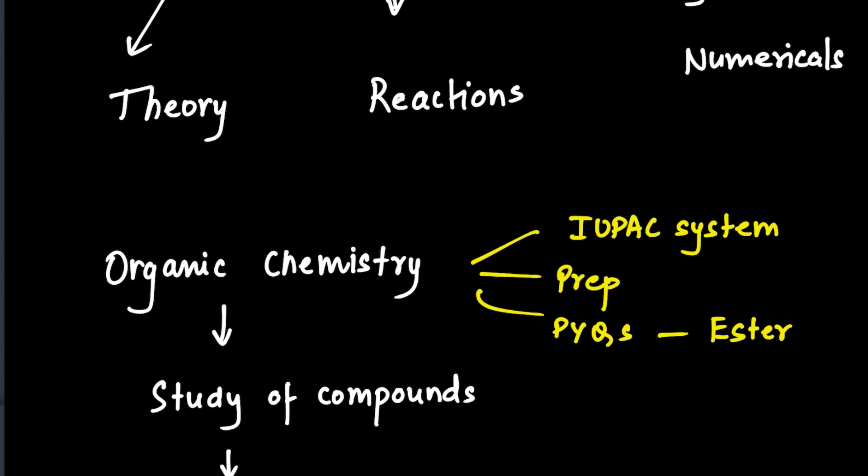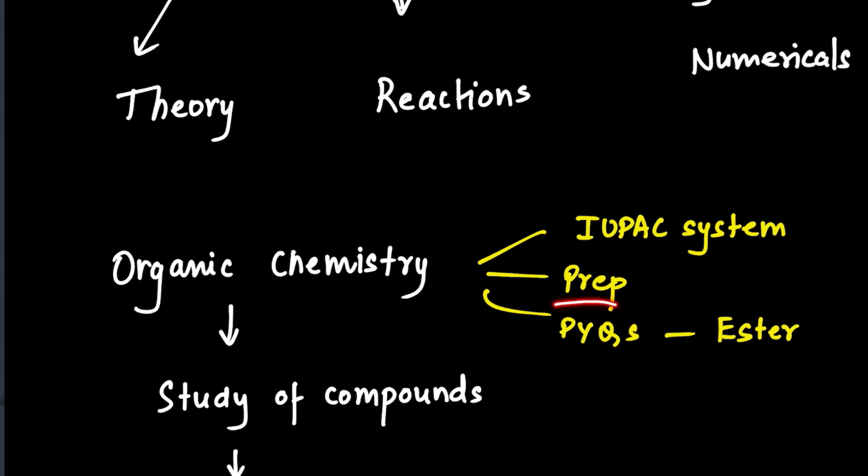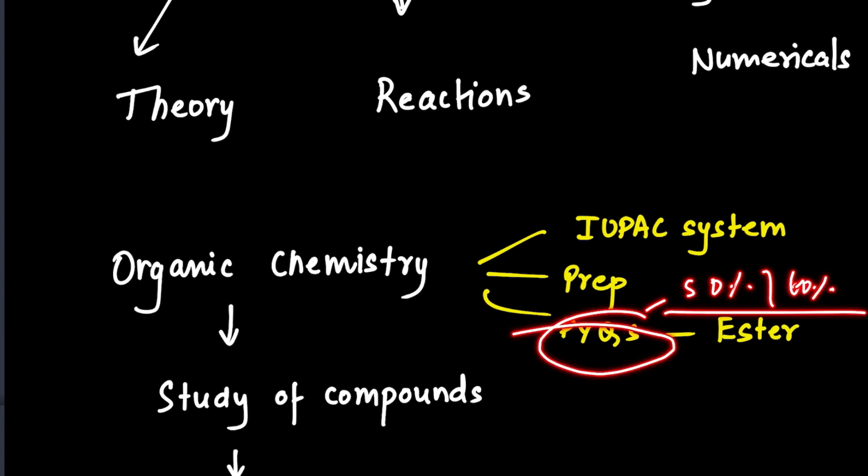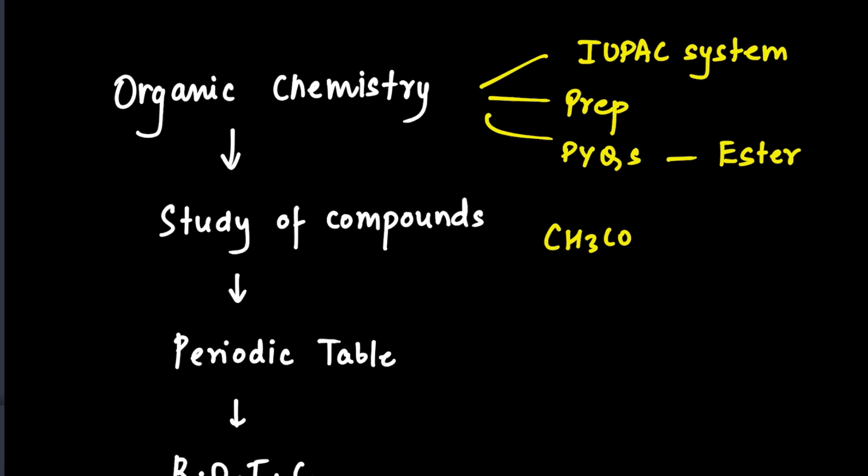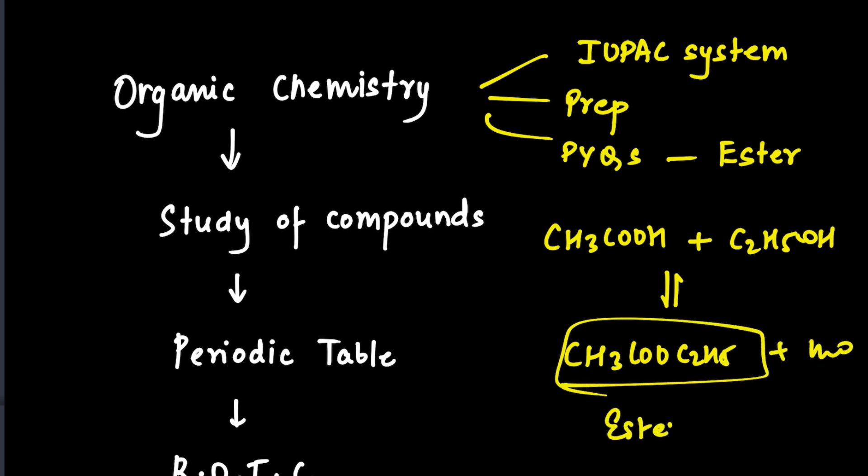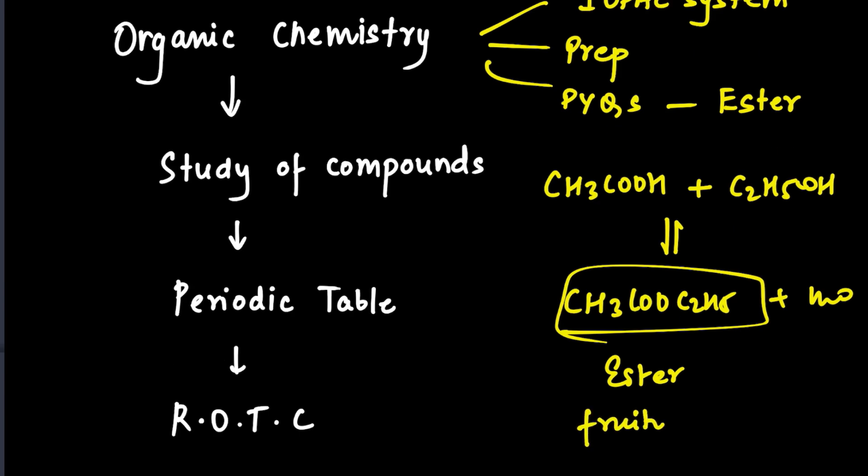And the PYQs, please do not neglect them. I feel around 50-60% of your paper has PYQs. For example, this question is frequently asked every year: CH3COOH that is acetic acid and C2H5OH that is ethyl alcohol when these react, what is formed? CH3COOC2H5 plus water is also formed. So this is ester and it has a fruity smell.